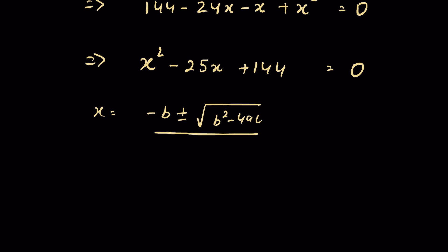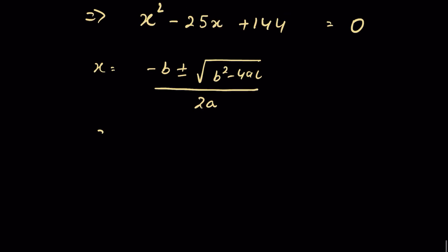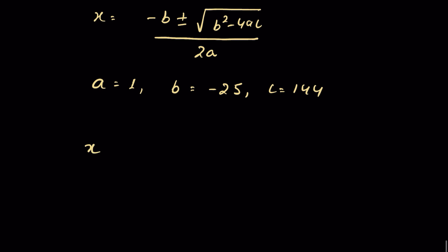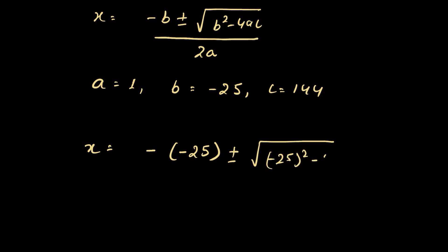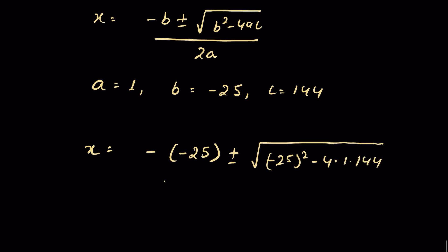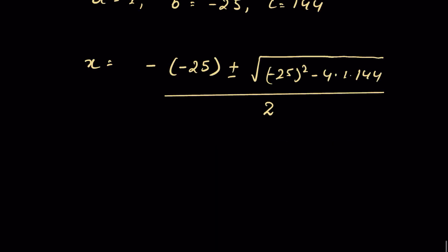Here, a is the coefficient of x², which is 1; b is the coefficient of x, which is minus 25; and c is 144. So x equals minus (minus 25) plus or minus the square root of (minus 25)² minus 4 times 1 times 144, all upon 2.